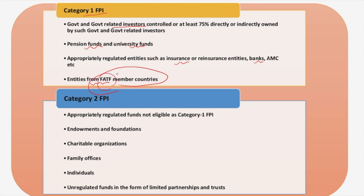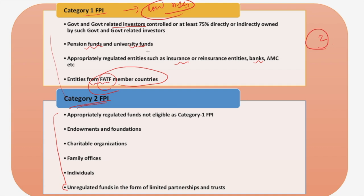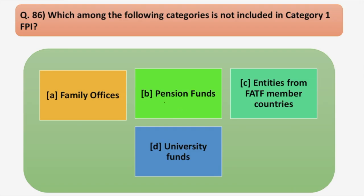FATF stands for Financial Action Task Force member countries. Category 1 and Category 2 are based upon the level of risk. Earlier there were three categories of FPI, which have recently been reduced to two. Category 1 belongs to the low-risk category. Pension funds, university funds, and entities from FATF member countries are part of Category 1. Family offices is the correct answer — it comes under Category 2 of FPI.